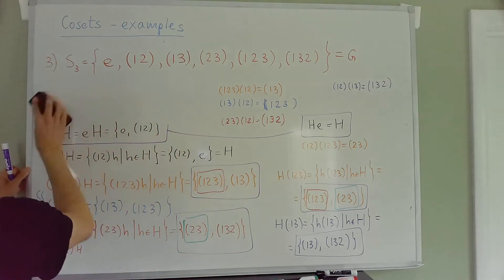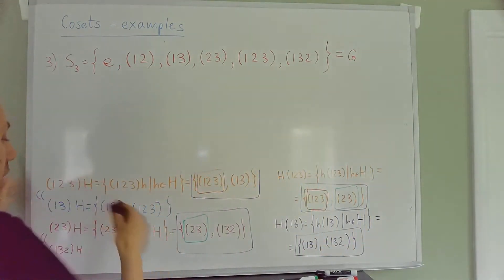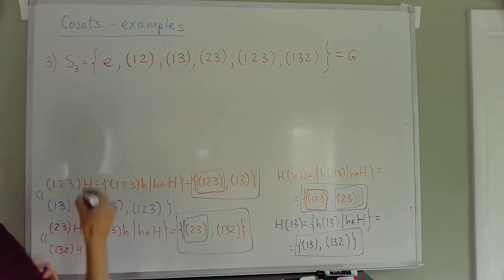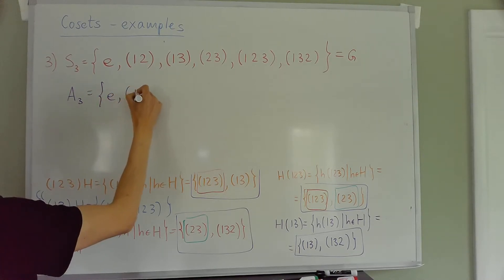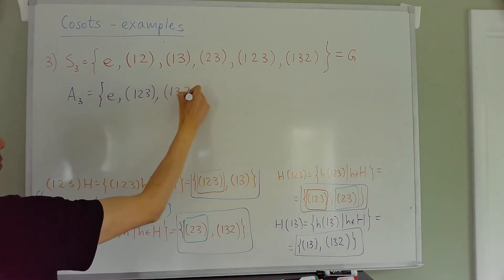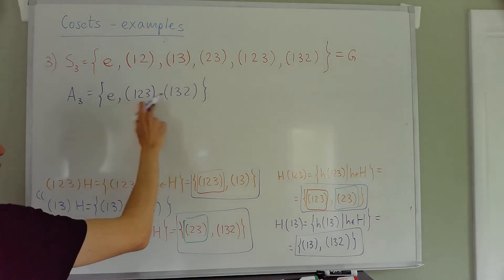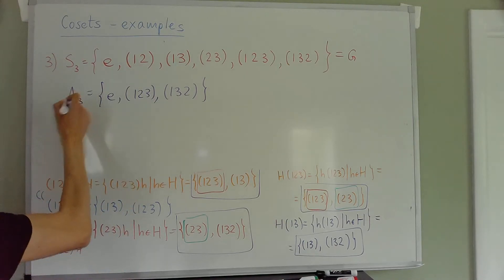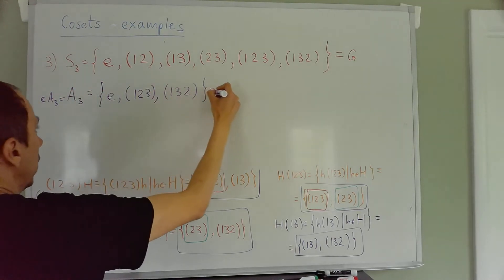One more example with the same group but a different subgroup. Let's take the subgroup generated by the 3-cycles, called A₃ = {e, (1 2 3), (1 3 2)}. Note (1 2 3) is some element g and (1 3 2) is g squared. I'll leave you to verify this is a subgroup. Of course one coset is A₃ itself, written eA₃ = A₃ = A₃e.